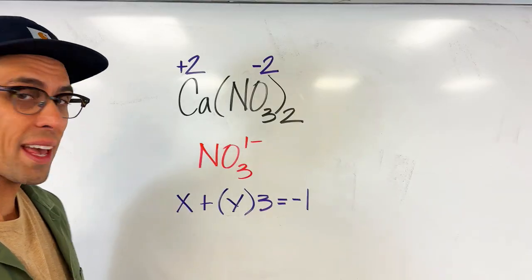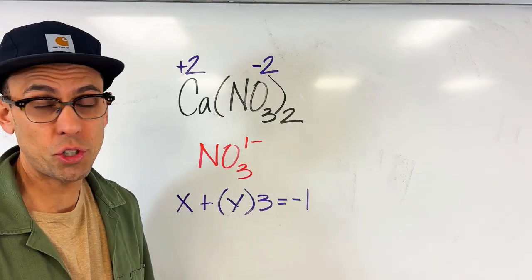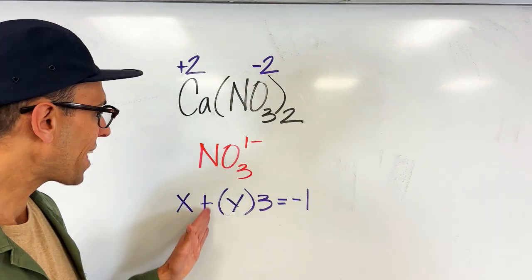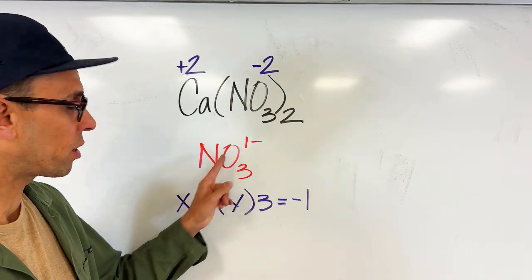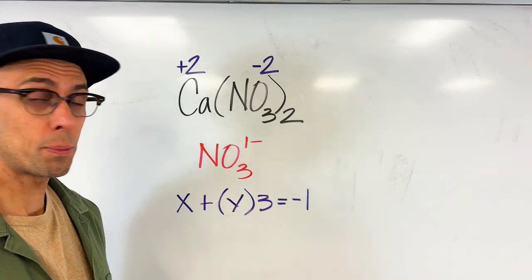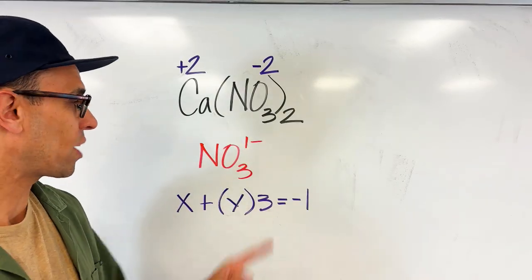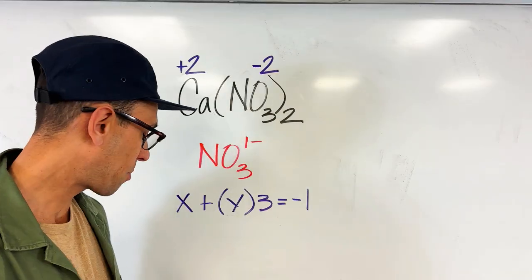Now taking that rule that oxygen is negative two and the other rule about the sum of the oxidation numbers for this polyatomic ion having to equal minus one, I'm going to write an algebraic equation. So I'm going to say that the oxidation number of nitrogen which we don't know, let's represent that with x, and when that's added to the oxidation number of oxygen which has to be multiplied by three because there's three oxygens, well altogether that has to equal minus one because that's the charge of the polyatomic ion.